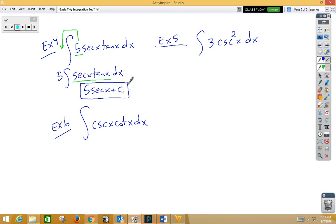In example five, this three is in our way, so let's move it out in front. We get three integral cosecant squared x dx. Now, the derivative of cotangent is negative cosecant squared x.